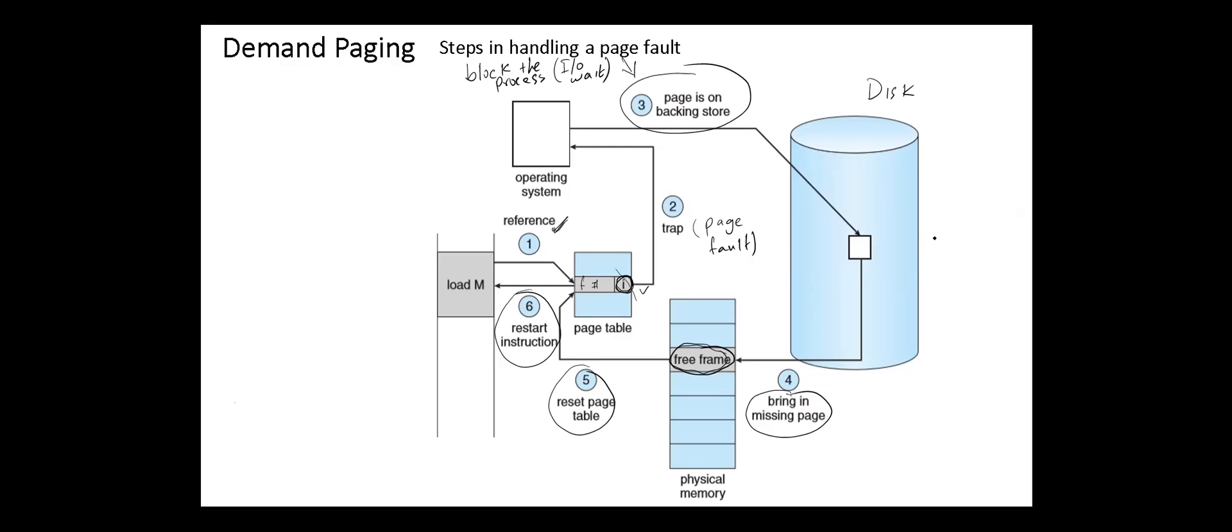In an extreme case, no pages are swapped in for a process until they are requested by page faults. This is known as pure demand paging.